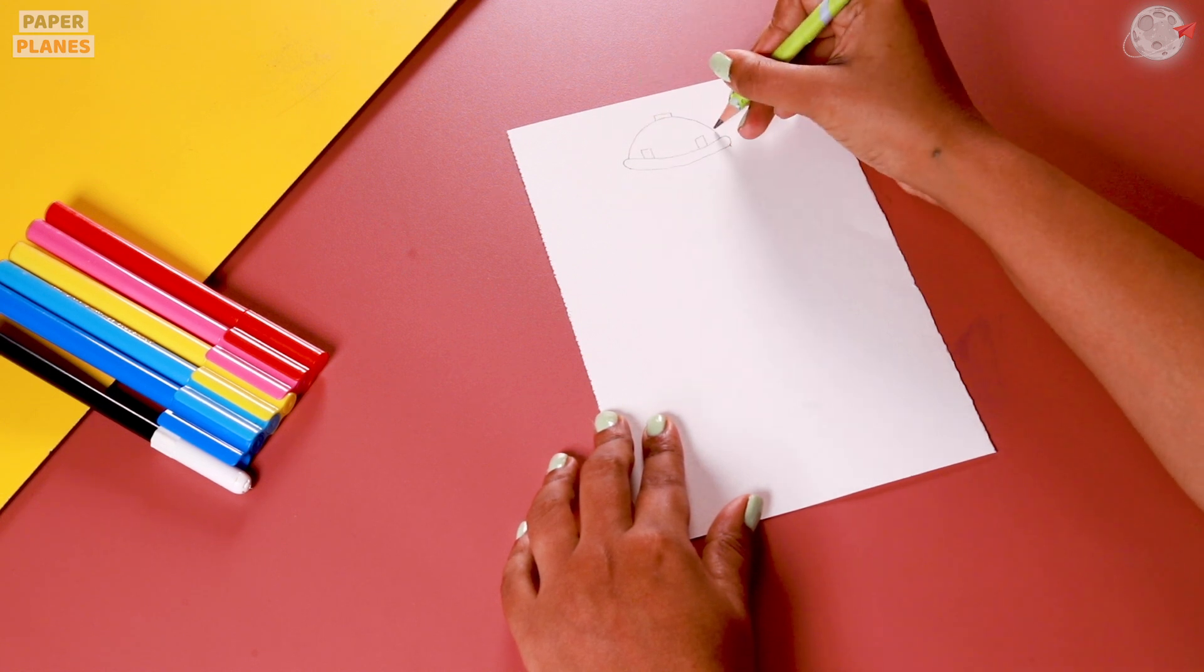After that, let's make two curves in the center and then let's make the legs. For the legs, we are going to make curved lines and join it with sleeping lines.